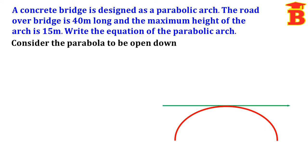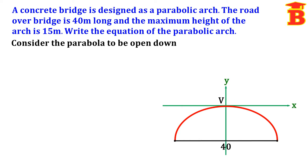This point is the vertex, marked as V. We draw the x-axis and y-axis with the vertex at the origin. The horizontal distance is given as 40 meters, so the road over the bridge is 40 meters long. The height of the arch is 15 meters, so this height is 15.